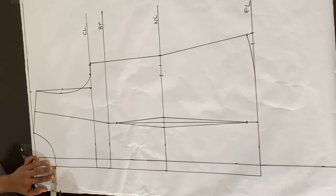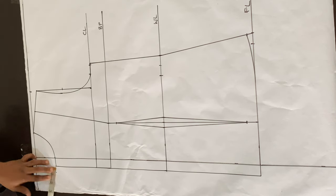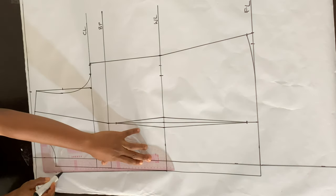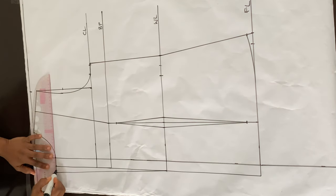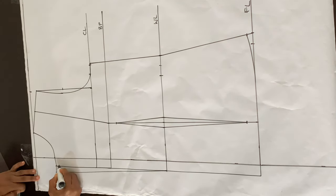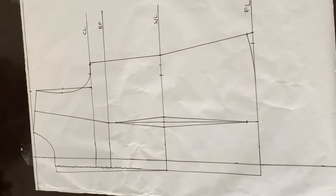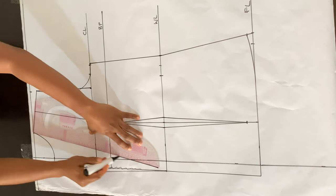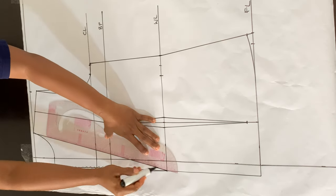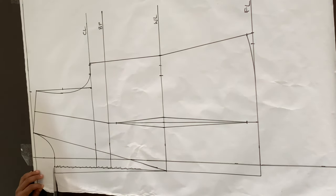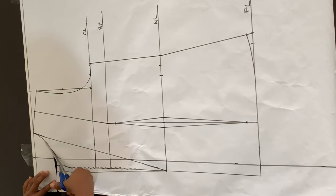At the neckline I'm going out by half an inch and connecting this with a diagonal line all the way to the waistline. Once done, we cancel out the first line we marked. Drawing a diagonal line from the neck width all the way to the waistline — this becomes our lapel.